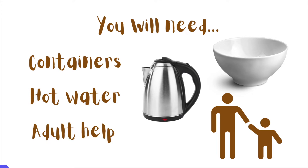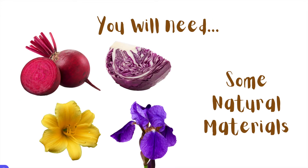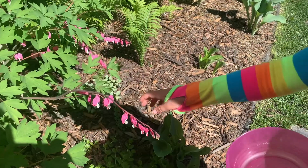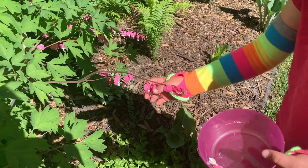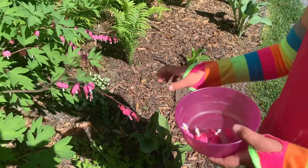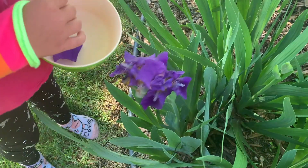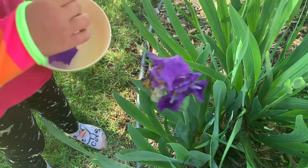You're going to need some hot water, and because we're using hot water, you're going to need some adult help. You're also going to need to gather some natural materials. These could be things that you find in your fridge, like fruits or veggies, or spices in your spice cupboard. Or they can be things that you find outside, like plants. Get adult help if you're gathering plants from outside, because some plants, even ones in your own garden, can be poisonous. So make sure you know what they are before you start picking them.